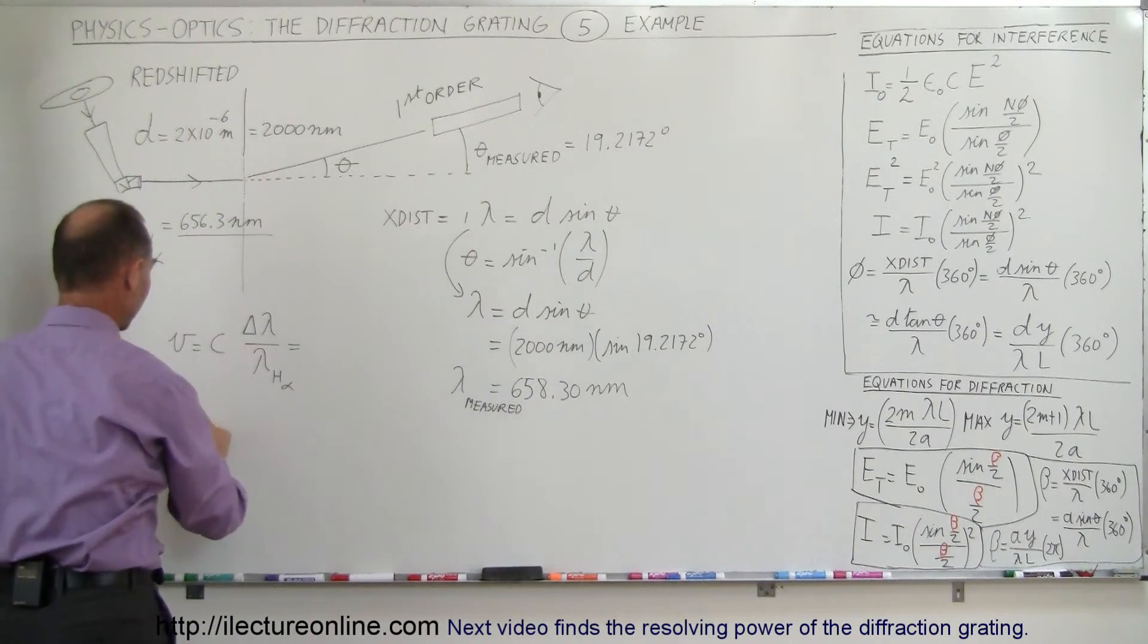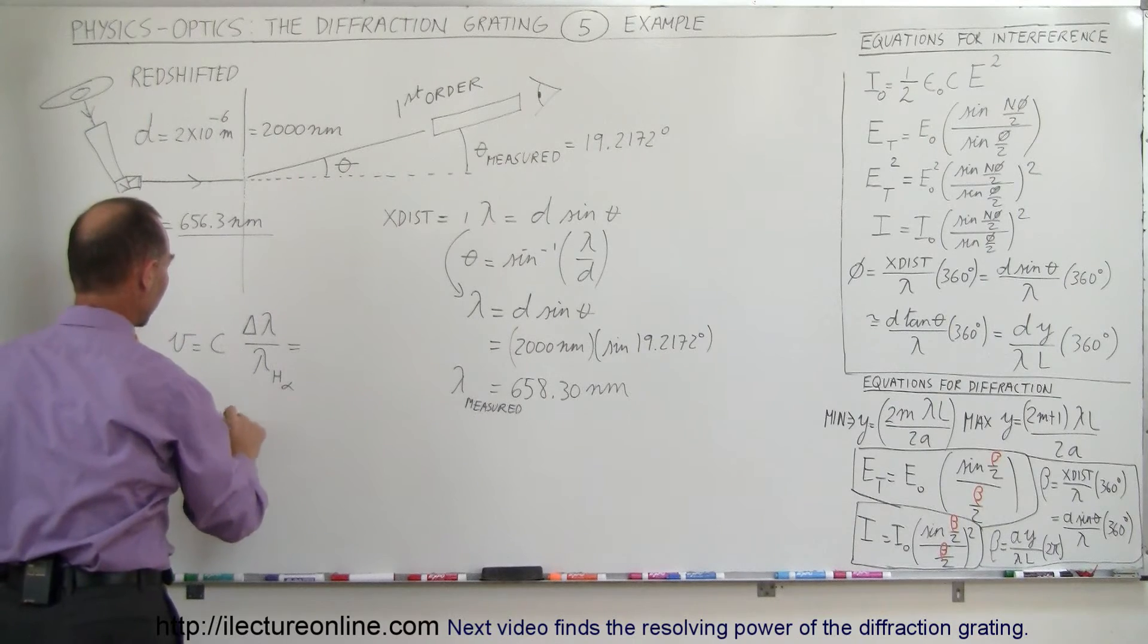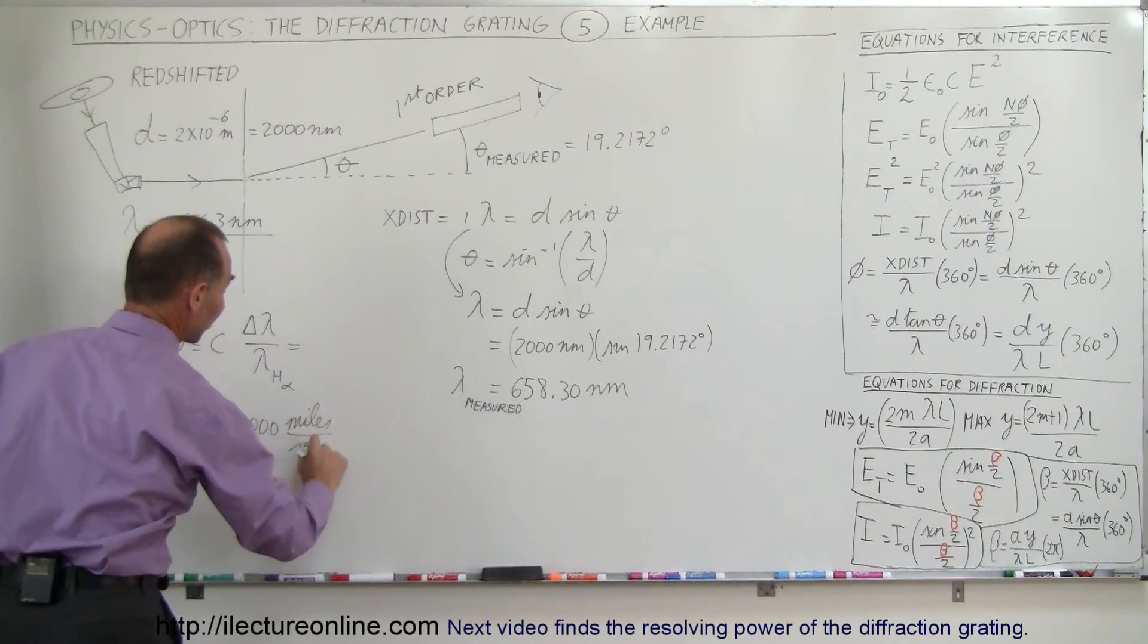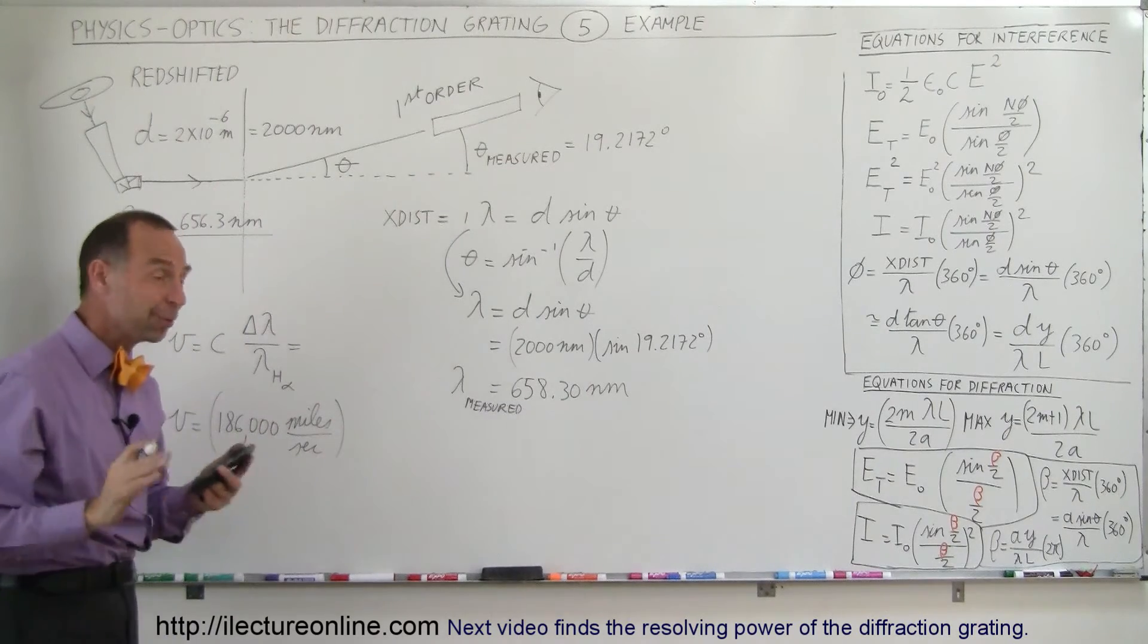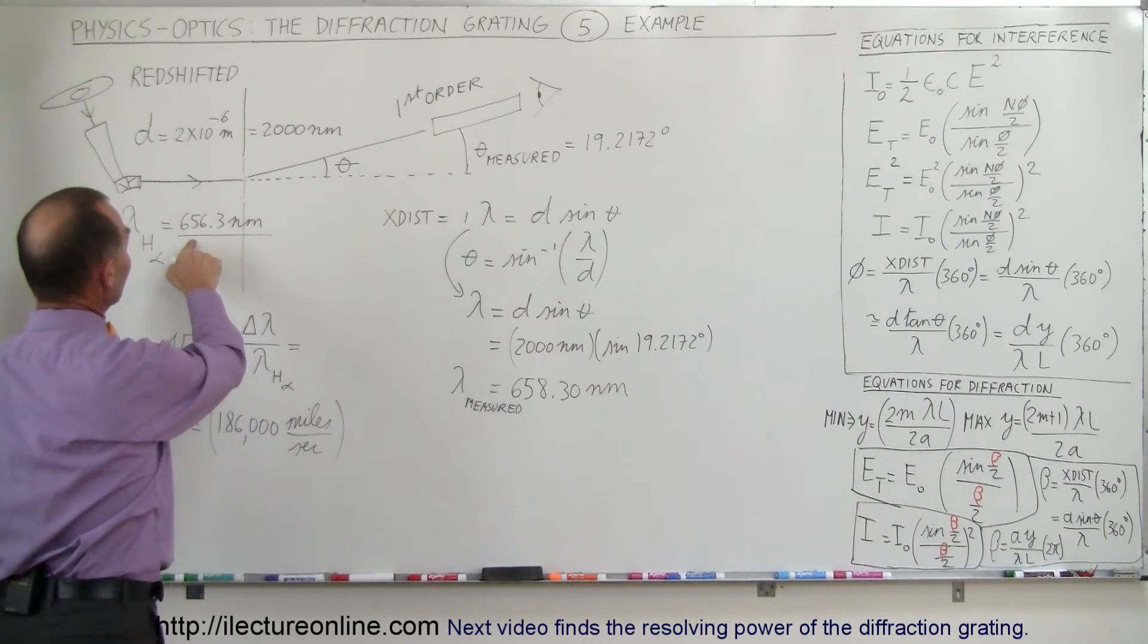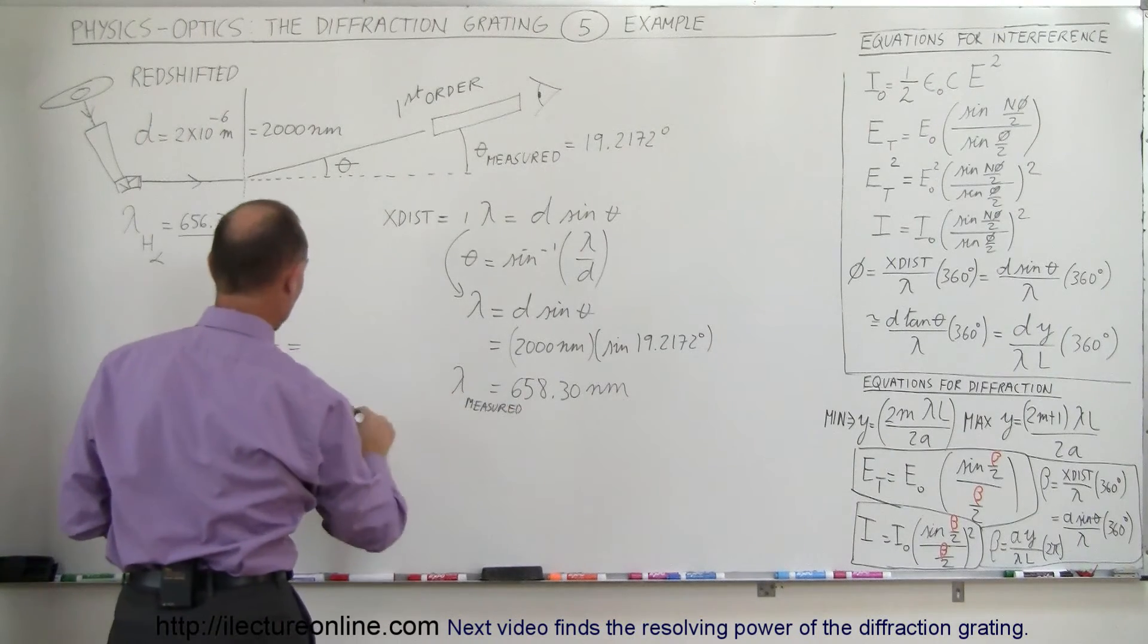Therefore, the velocity of the galaxy is equal to the speed of light, which is 186,000 miles per second, or 300,000 kilometers per second, whatever units you prefer.